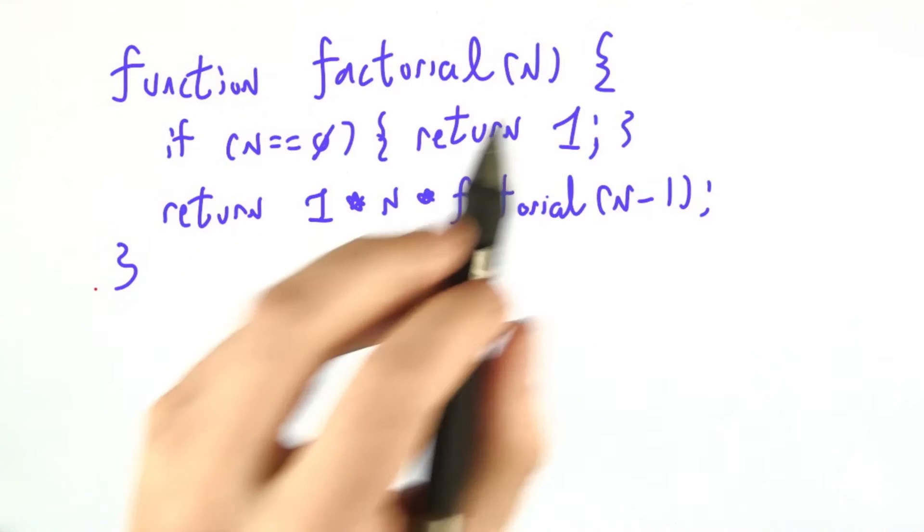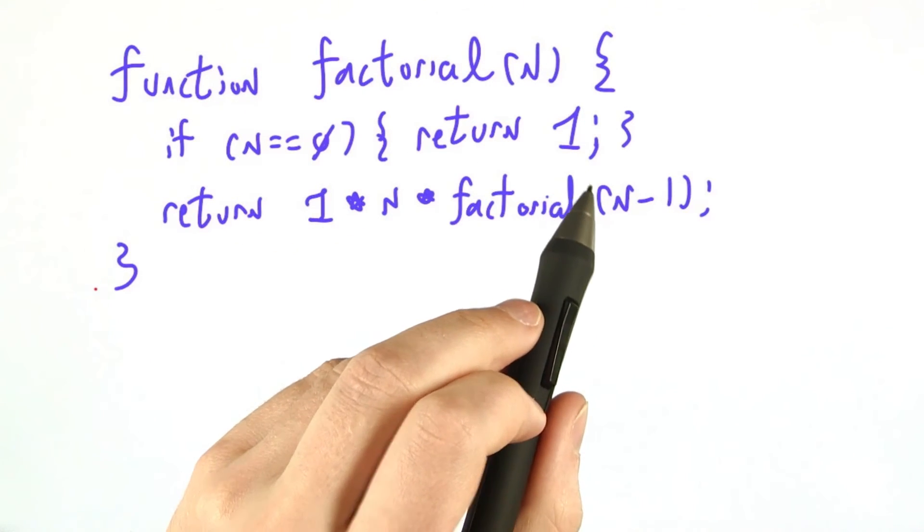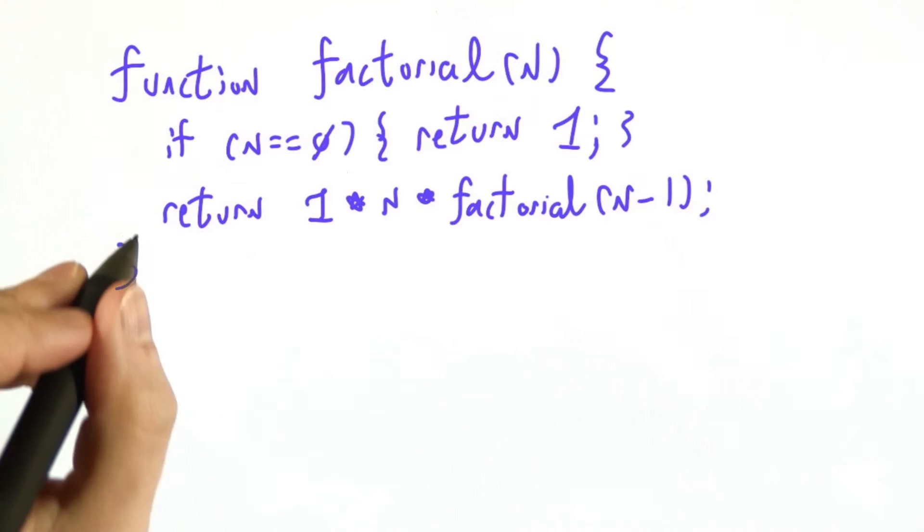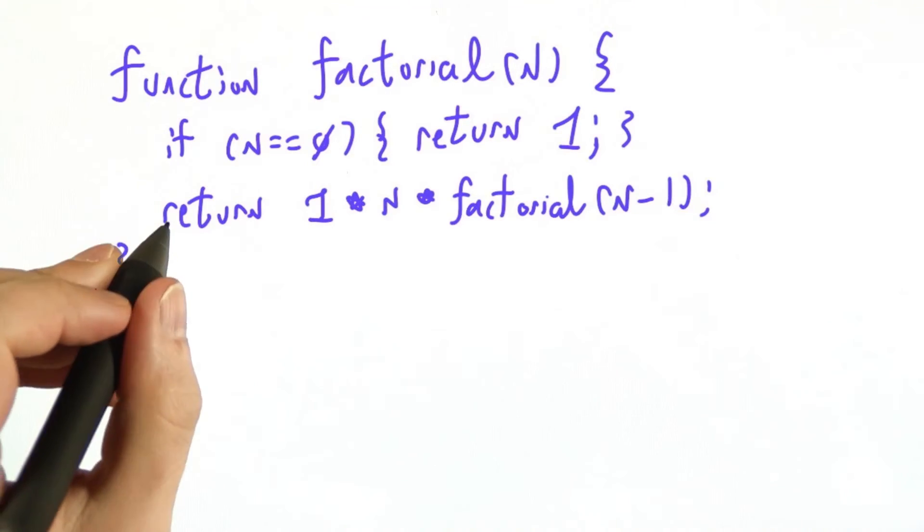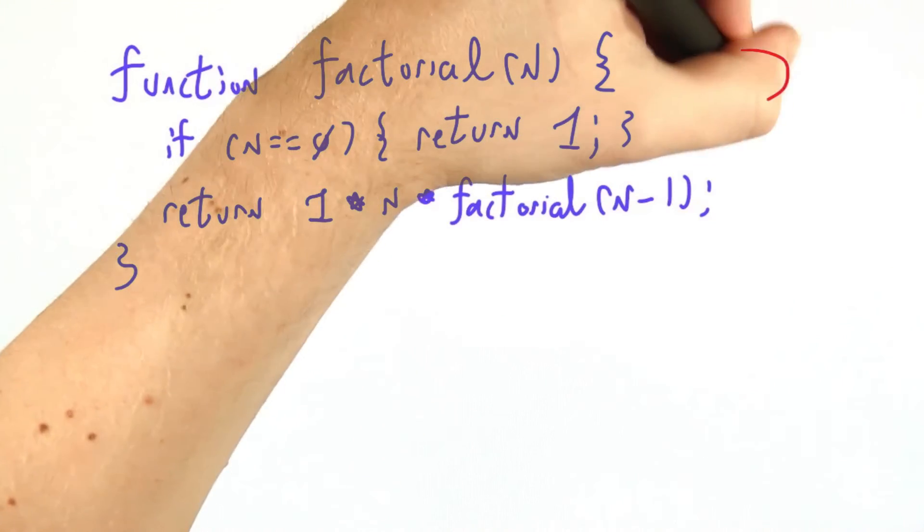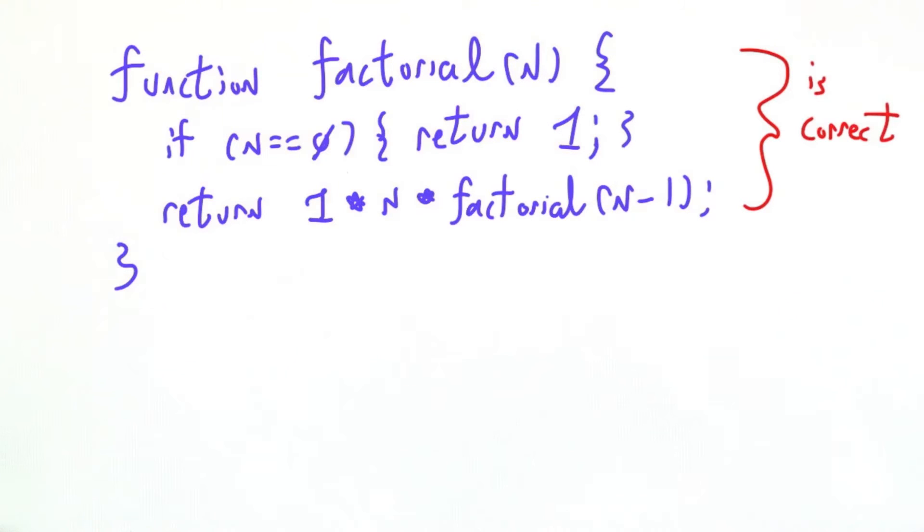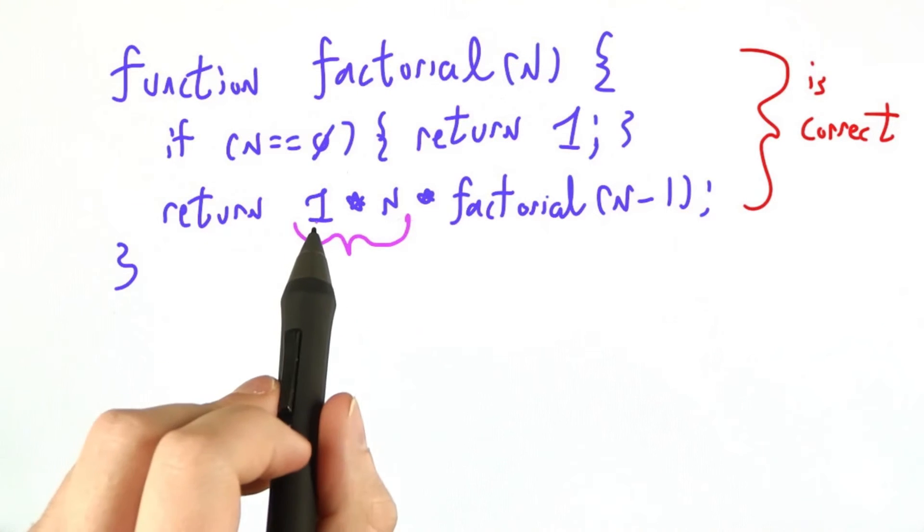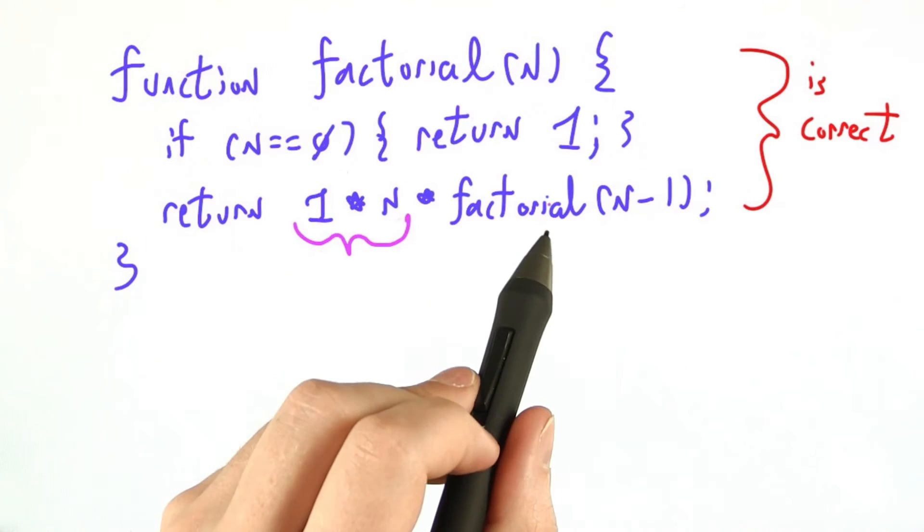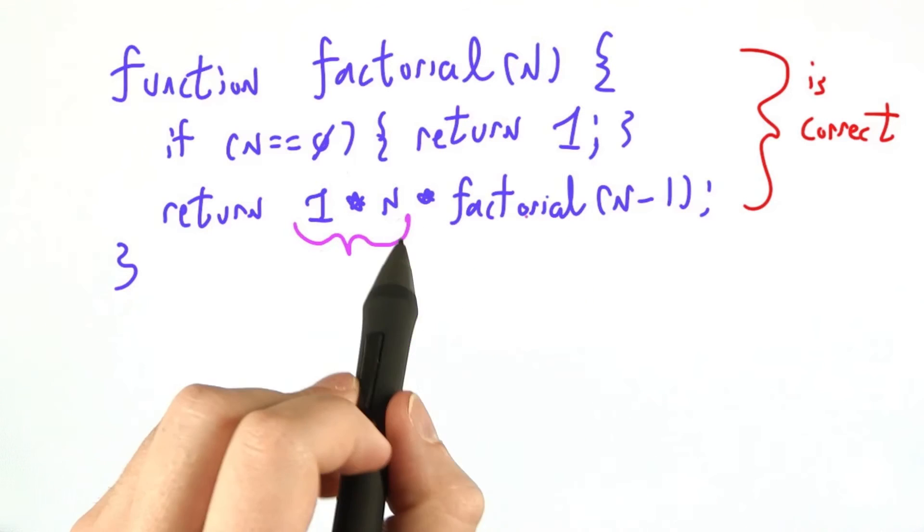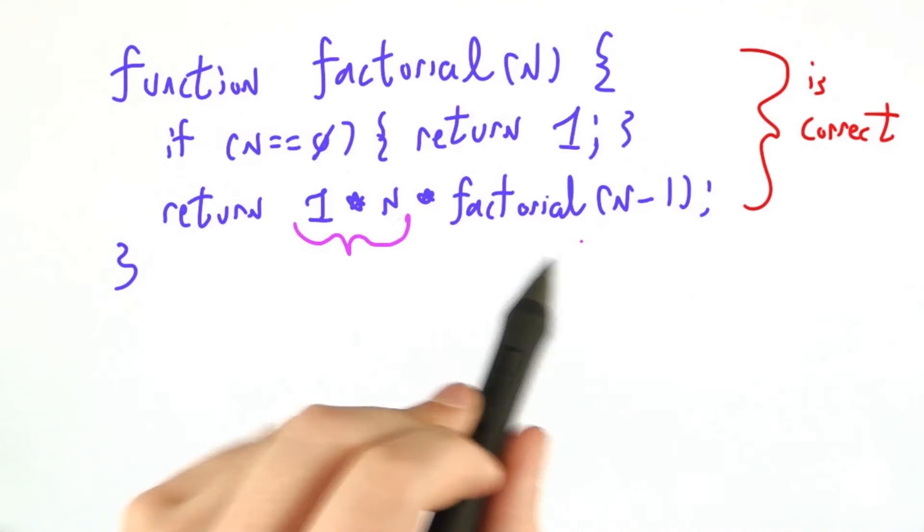Here I've written JavaScript code to compute the factorial function, and this code is correct. Now, of course, as soon as I say that, there's going to be one minor typo, but let's just assert that this code is correct. It actually computes factorial, but it's a little slower than it needs to be. Now, you may have noticed that I wrote 1 times n times factorial of n minus 1, instead of just n times factorial of n minus 1.